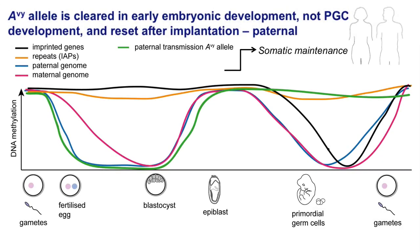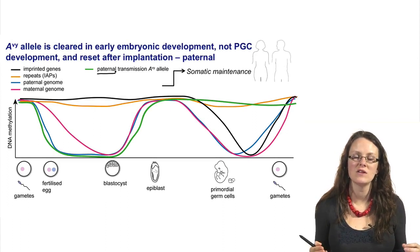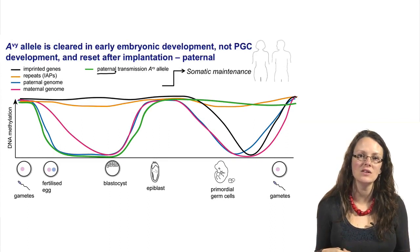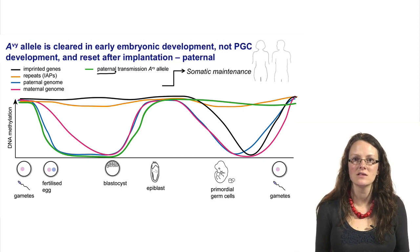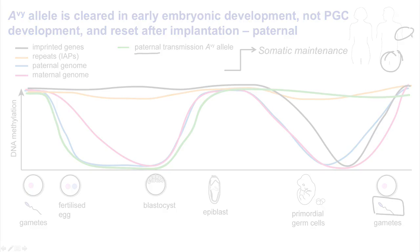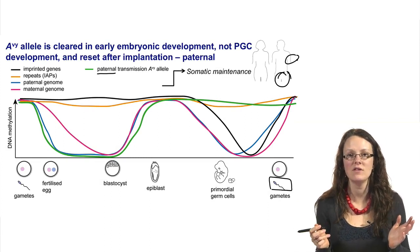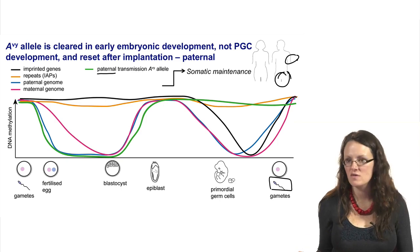Considering the agouti viable yellow allele transmitted paternally: following paternal transmission, there was no difference in the spectrum of phenotypes in the offspring, whether the father was yellow with an active allele, or pseudo-agouti with a silent, DNA-methylated allele. Looking at DNA methylation in the mature sperm of a yellow male versus a pseudo-agouti male, the sperm from the yellow male has a methylation state very similar to the somatic tissues of that same male — both look identically hypomethylated. In a pseudo-agouti animal, both sperm and somatic tissues are heavily hypermethylated.